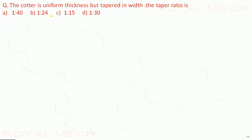The cotter has uniform thickness but tapered width. The taper ratio options are 1 to 40, 1 to 24, and 1 to 30. The standard taper ratio for a cotter is 1 to 24.